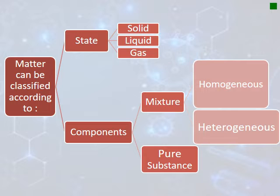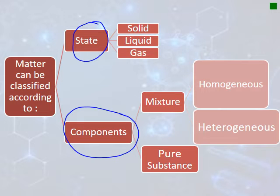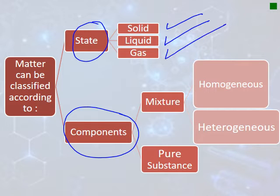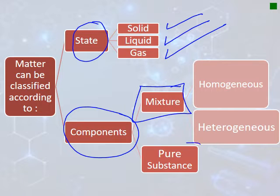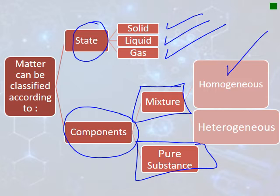Matter is classified either according to their state — as solids, liquids, and gases — and also a special one called plasma. Or according to their components — as mixtures or pure substances. Mixtures have two types: either homogeneous or heterogeneous.